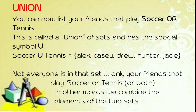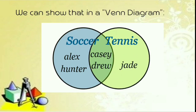Not everyone is in that set — only your friends that play soccer or tennis or both. In other words, we combine the elements in the two sets. So, pagsasamayin lamang natin ang nasa soccer at nasa tennis na set. We can show that in the Venn diagram. In soccer, Alex and Hunter only play soccer. In tennis, only Jade plays tennis alone. Now, Cassie and Drew play both tennis and soccer. Si Cassie at Drew ay nasa pagitan ng dalawang bilog.